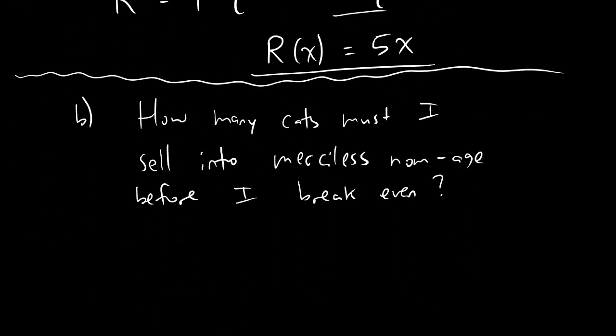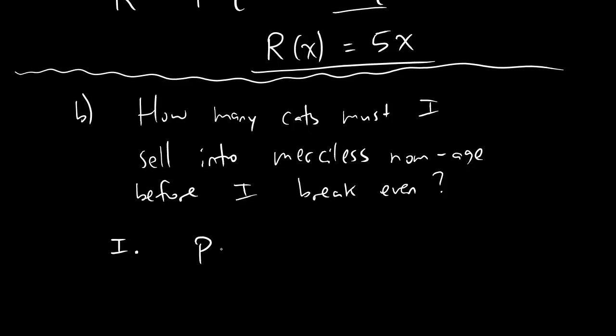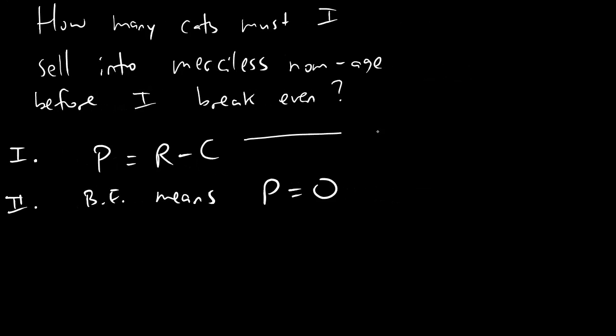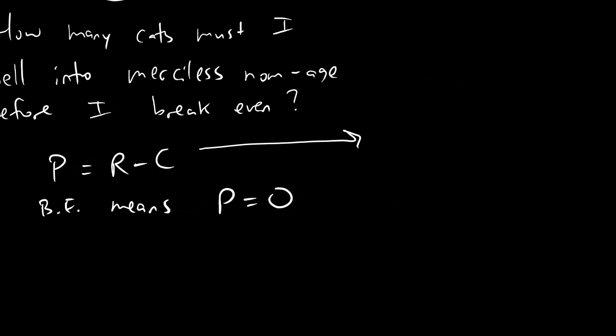Squiggly line. And now let's move to part b. Part b says, how many cats do I have to sell into merciless nomage? I assume we all know what that means. Before I break even. So this is where you remember two things. One, let's do some Roman numerals. Roman numerals are cool. One, profit equals revenue minus cost. And two, break even is precisely the statement that profit equals zero.